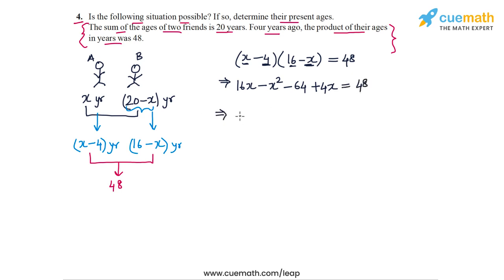So let's collect the terms. We have minus x squared. And then we have 16x plus 4x, so that's 20x. And then if you bring 48 to the left side, we'll have minus 64 minus 48, and that will be equal to minus 112.